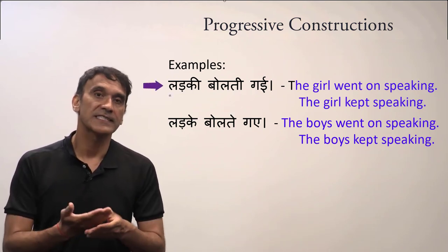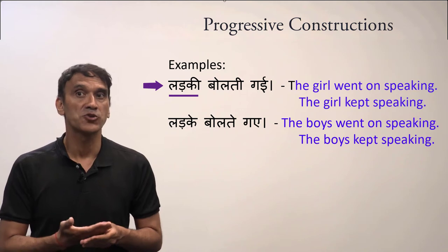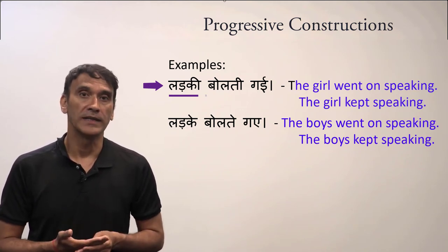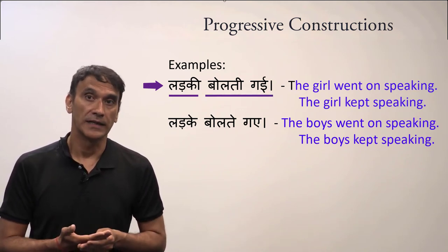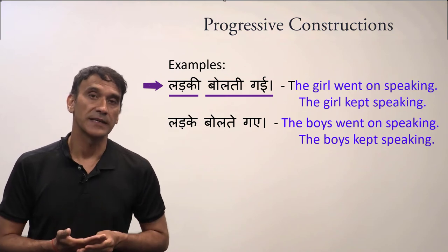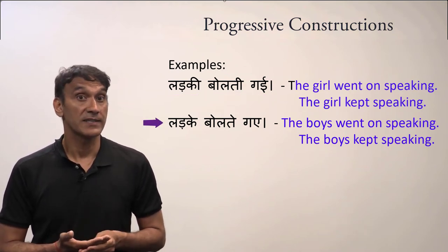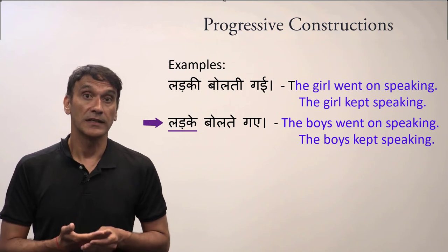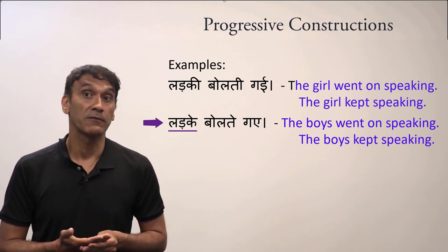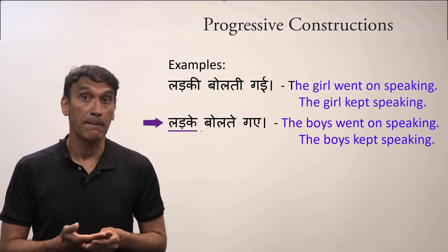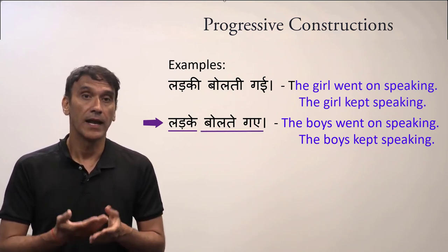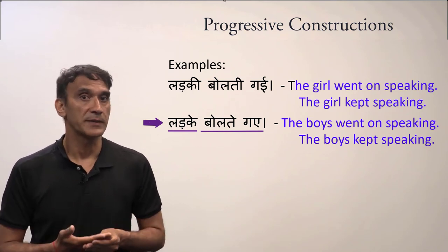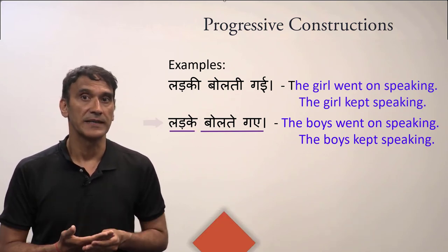In the first example, ladki is feminine, so the habitual participle takes the feminine form: bolti. Ladki bolti gai - the girl kept speaking. In the second example, the subject ladke is masculine plural, so the habitual participle takes the masculine plural form: bolte. Ladke bolte gai - the boys went on speaking, the boys kept speaking.